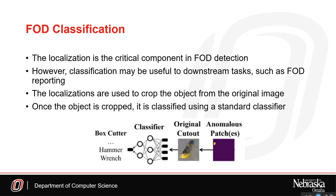The critical component of the proposed method is the localization. However, classifying the detected objects may be useful to downstream tasks such as automated FOD reporting systems. Therefore, we extend the localization method to perform object classification. The segmentation maps are used to crop detected objects out of the original image. The cropped object is then classified using a standard supervised classifier such as DenseNet. Since the critical localization component is performed using a self-supervised method, it is acceptable for the classification component to be supervised as a beneficial extension to the proposed solution.